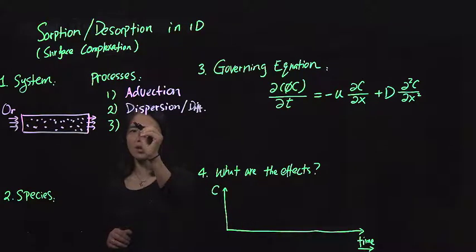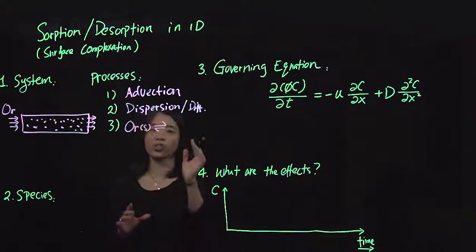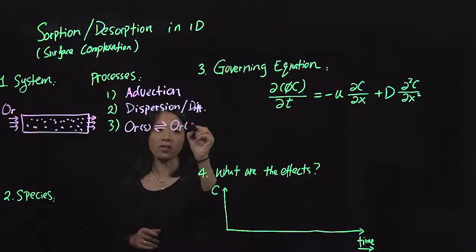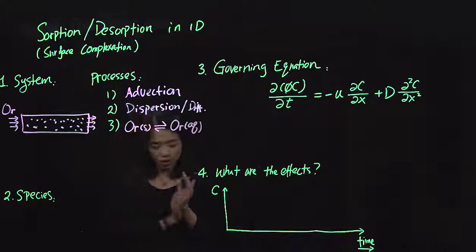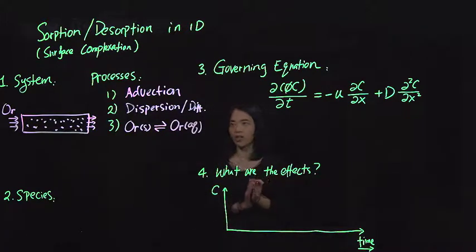So let's say we have the solid phase sorbing organic matter in exchange with the species in the water phase. So now usually, we think about sorption, desorption, or like surface complexation. These reactions tend to occur very fast or thermodynamically controlled. And so it's different from mineral dissolution precipitation. We don't talk about these reaction rates, reaction rate laws.